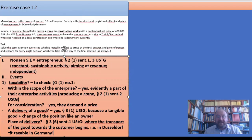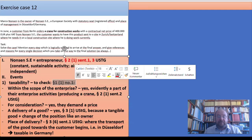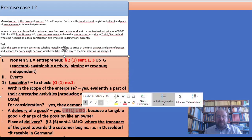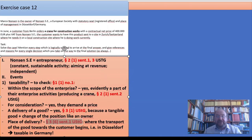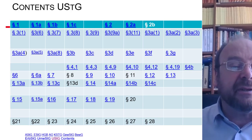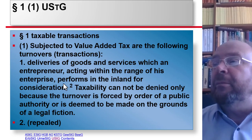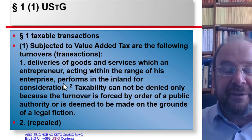We should not forget that we cited some rules: §1(1) No.1, §2(1), and §3(1) and §3(6). We should check if these rules really contain the things which we used them for. §1(1) No.1 states: deliveries of goods and services which an entrepreneur acting within the range performs in the inland for consideration. Yes, these were the five criteria which we checked, and No.5 and No.4 would indeed not be fitting.